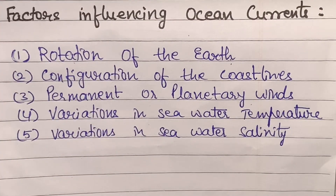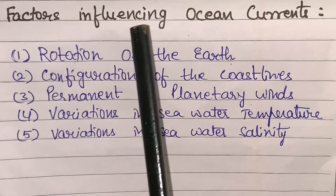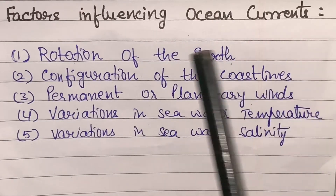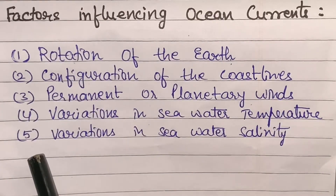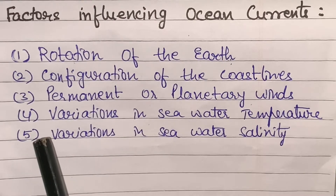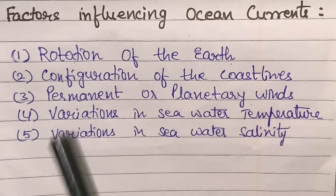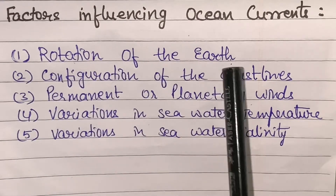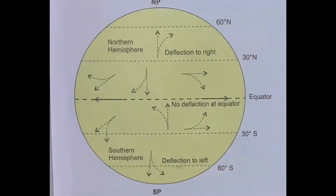Cold currents flow from higher latitudes to lower latitudes, and thus bring cold water from higher latitudes to lower latitudes. The third topic is factors influencing ocean currents. There are five factors that influence ocean currents. First, I will take the rotation of the earth. The Coriolis effect is caused by the rotation of the earth.